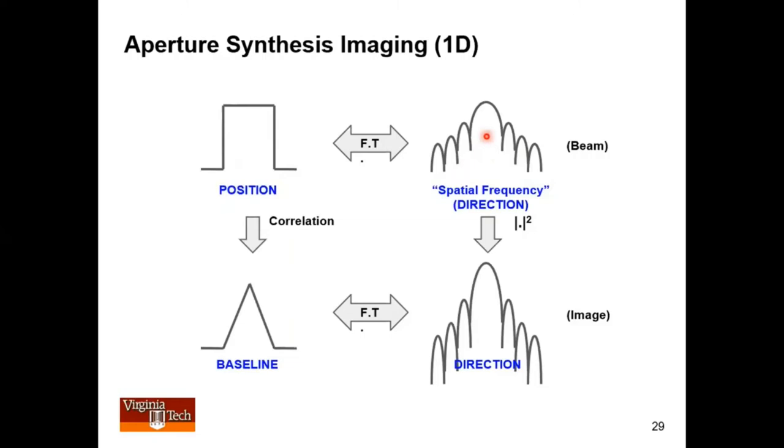If I have a uniformly illuminated aperture, this is one dimension, I get a beam. And that beam has a sinc pattern. In fact, this is why beams from large reflectors look like sinc, is because they are Fourier transforms of approximately uniform aperture distributions.